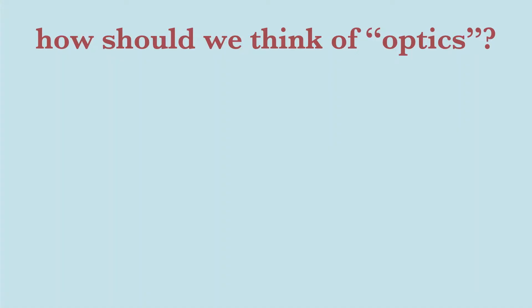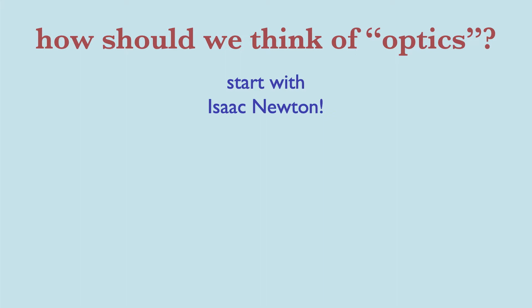When we say how should we think of optics, as in many areas of physics, we say, why don't we start with Isaac Newton? When we think of Newton, we think of him in 1687, when his famous Principia — Principles of Natural Philosophy — was published, which from our physics point of view is the laws of mechanics: Newton's three laws, the laws of astronomy and planets. He derives everything mathematically from his three laws with a logical structure following the ancient Greek mathematicians.